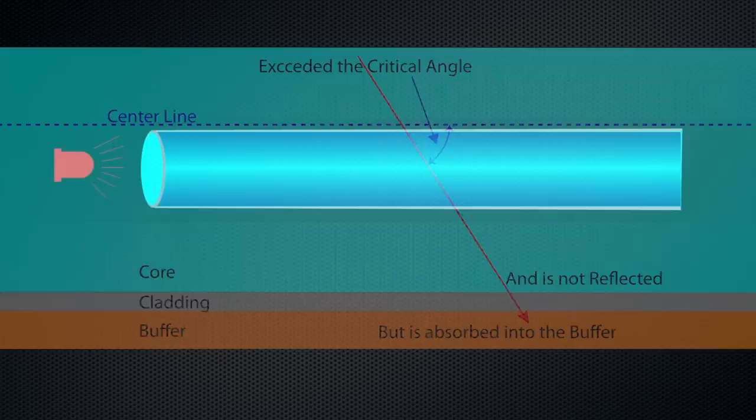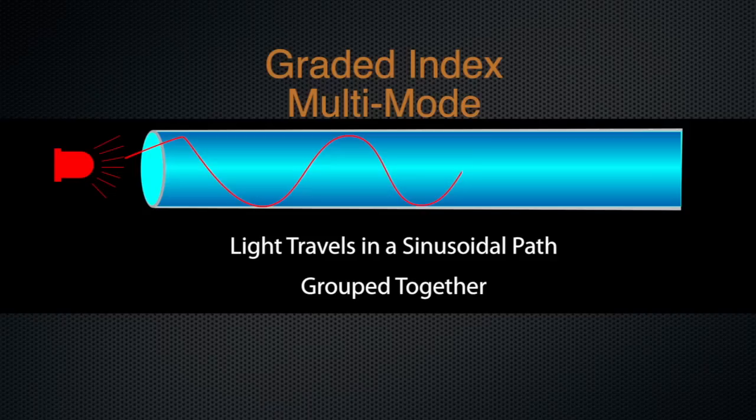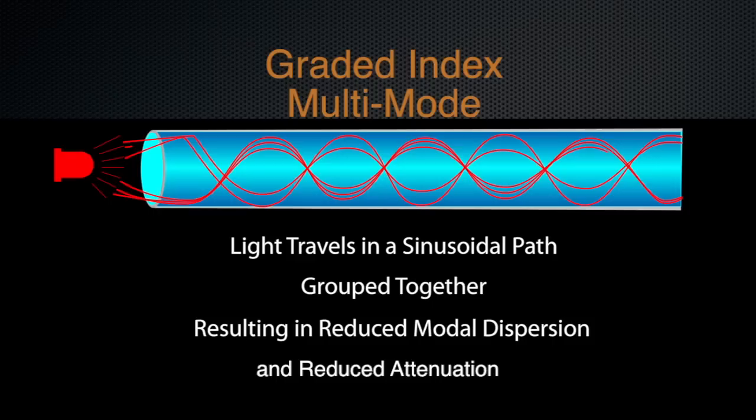Graded index multi-mode fiber uses a different type of core or fiber optic strand. The core's refractive index gradually changes from the center outward. This graded index provides multiple boundaries for reflection. The light rays travel down the length of the optical core in a sinusoidal path, making it more coherent. This evens out the speed difference between the reflected light rays so that they arrive much closer in time at the receiver. Thus the distortion, or modal dispersion, is reduced, allowing graded index multi-mode fiber to be used over longer distances than stepped index multi-mode fiber, but still much less than single-mode fiber.